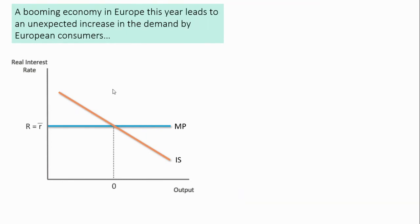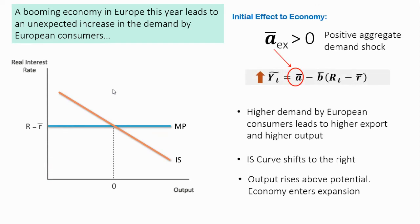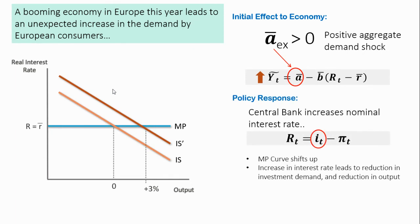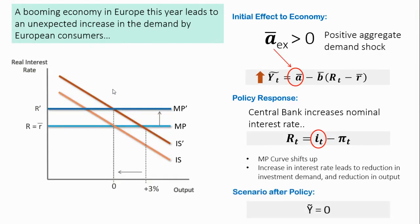Lastly, a booming economy in Europe leads to an unexpected increase in demand by European consumers. This leads to higher exportation and higher revenue and output for the domestic economy — a positive aggregate demand shock. The IS curve shifts to the right and the economy enters an expansion. To reduce the inflation brought by the positive output gap, the central bank targets an increase in interest rate by reducing money supply, shifting the MP curve upward, reducing investment, and bringing the economy back to potential.